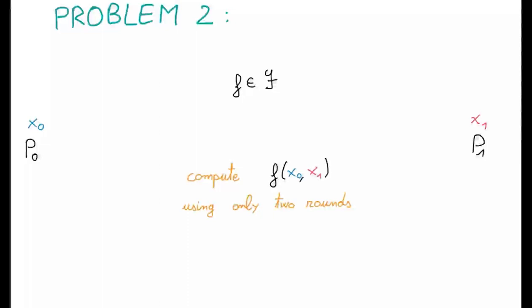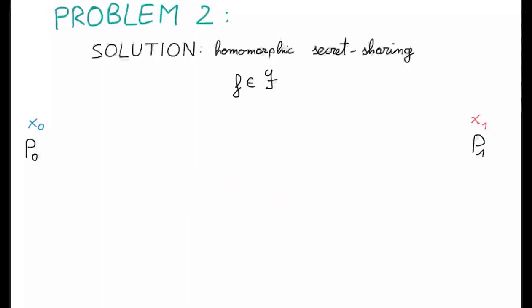Our goal is to apply a function F belonging to some class on these inputs, and we want to obtain the output using only two rounds of interaction. A possible solution to this problem is called homomorphic secret sharing.